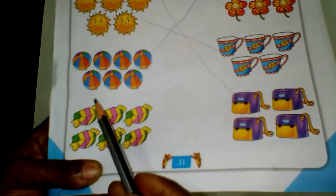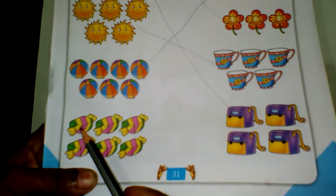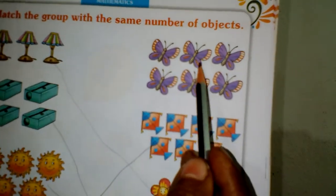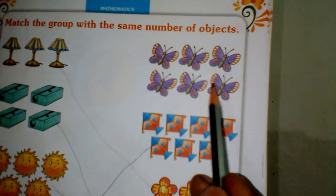Next, chocolate. How much chocolate? One, two, three, four, five, six. Where is six? Butterflies. One, two, three, four, five, six. Please draw the line.